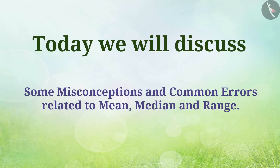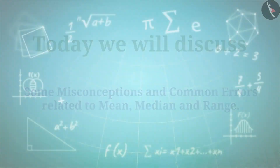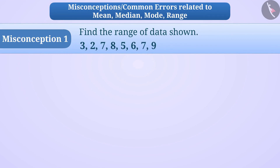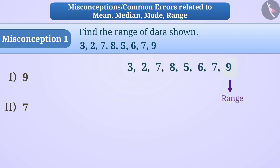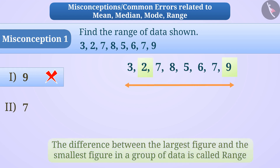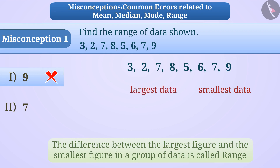Today we will discuss some misconceptions and common errors related to mean, median and range. Misconception 1: some children think the largest figure in a group of data is called the range — but this is wrong. The correct definition is that range is the difference between the largest and smallest figures. So for this data, the range is 9 minus 2, which equals 7.